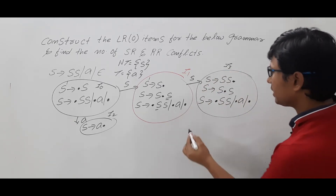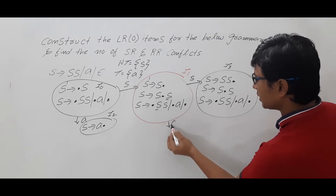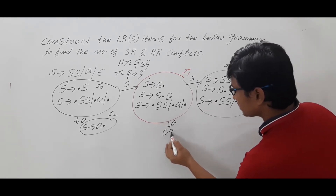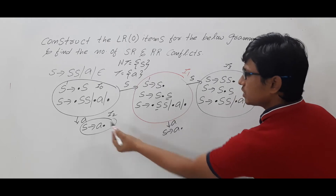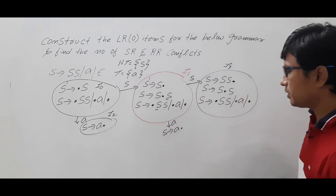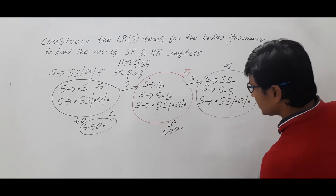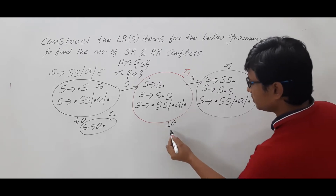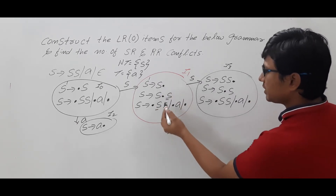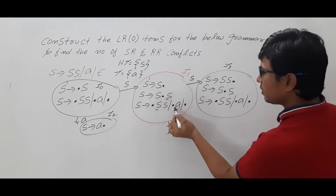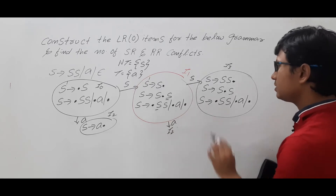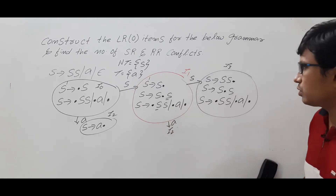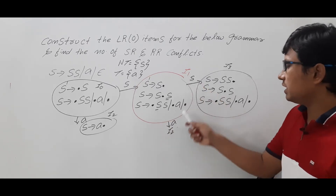If I write goto I1 on A, what will happen? It will be S → A•, which is equal to I2. So I can erase this and write I2. This one is completed — on S we have written, on A we have written. So I1 is completed; we have computed the goto on S and A.